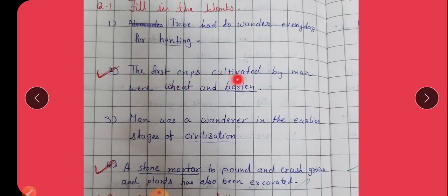The first crop cultivated by men were wheat and barley. Underline below barley. Man was a wanderer in the earlier stage of civilization. Underline below civilization.